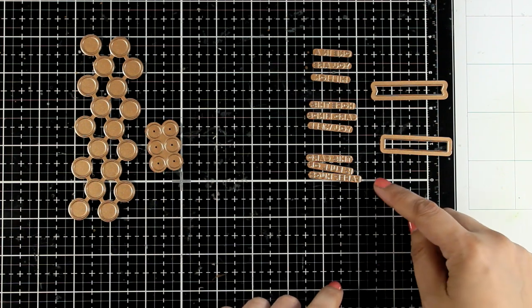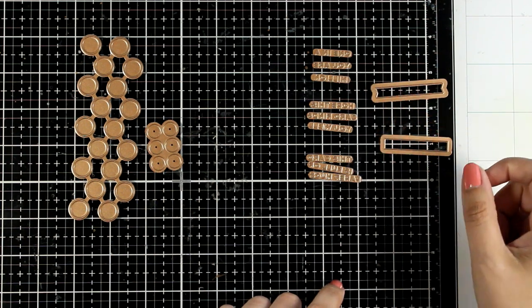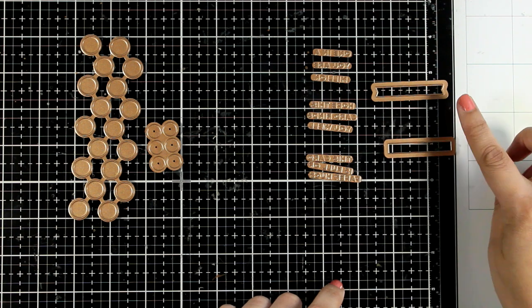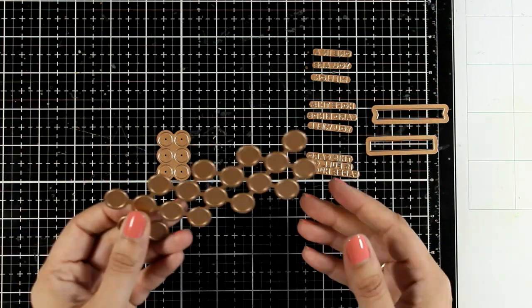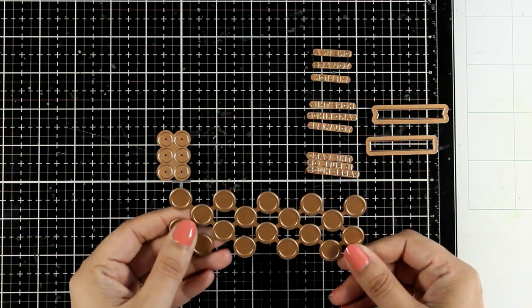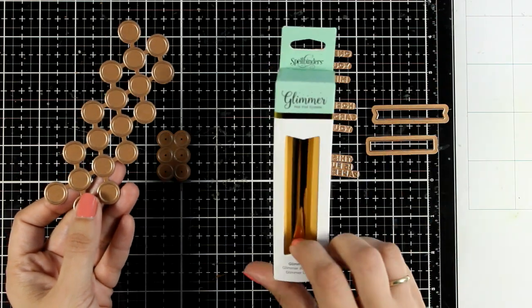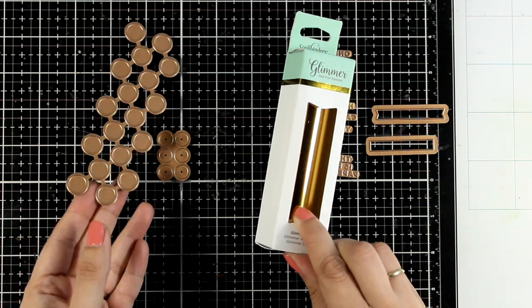You will also get a bunch of tiny circles that fit inside the bigger ones. You can cut them out and you will also get three different sayings that you can put together along with two dies that cut out your sentiments. So I'm going to start with the main glimmer plate and I'm going to use the gold foil that comes in the kit.